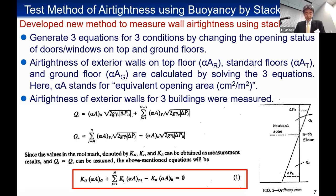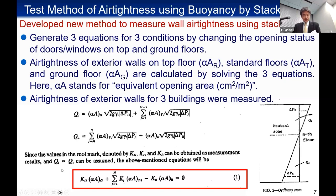We generate three equations expressing the relationship between measured inside-outside pressure difference and air volumes infiltrated through exterior walls, for three conditions by changing the opening status of doors and windows on the top and ground floors. Air tightness of exterior walls at the top floor (alpha AR), standard floors (alpha AT), and ground floors (alpha AG) are calculated by solving three simultaneous equations in three unknowns. Alpha A stands for equivalent opening areas, with units of square centimeters per square meter.